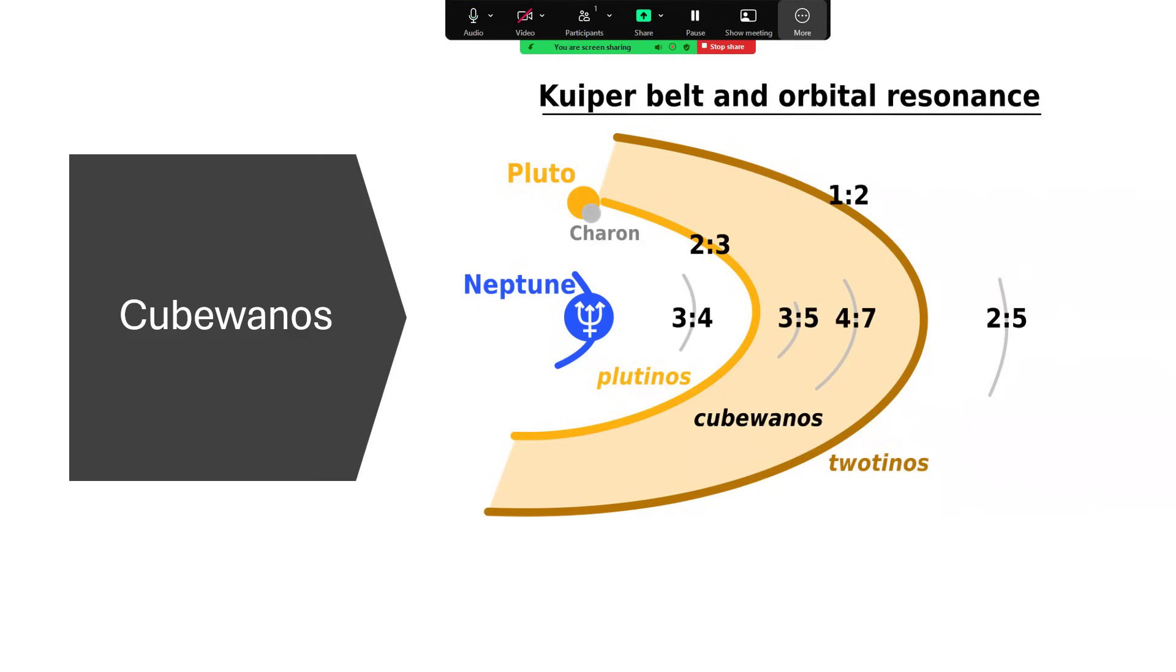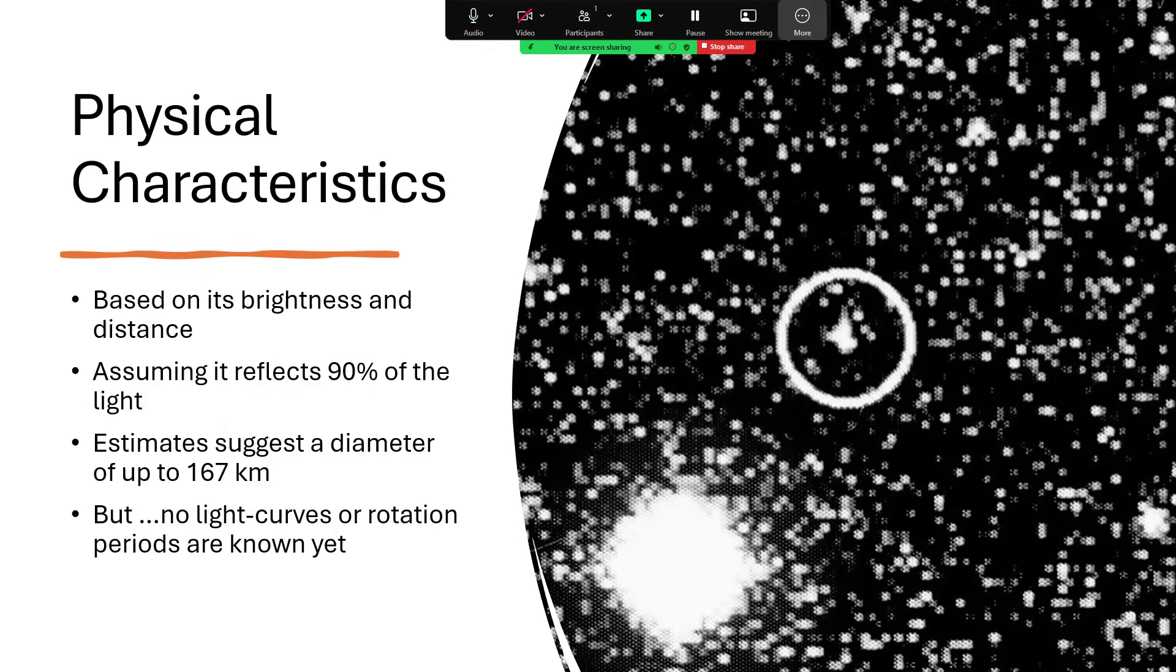So QB1, is it a big object? Well, we don't have very much information actually. We know its distance, 40 to 47 astronomical units. We know how bright it is, and we assume that it reflects about 90% of the light which hits it. This gives us a diameter of about 167 kilometers, about 100 miles. Some people say it's a little bit smaller than that, some say it's a little bit bigger. The estimates have varied between 100 and 250 kilometers, so quite a sizable object, getting on for the size of an asteroid like Vesta in the inner asteroid belt.